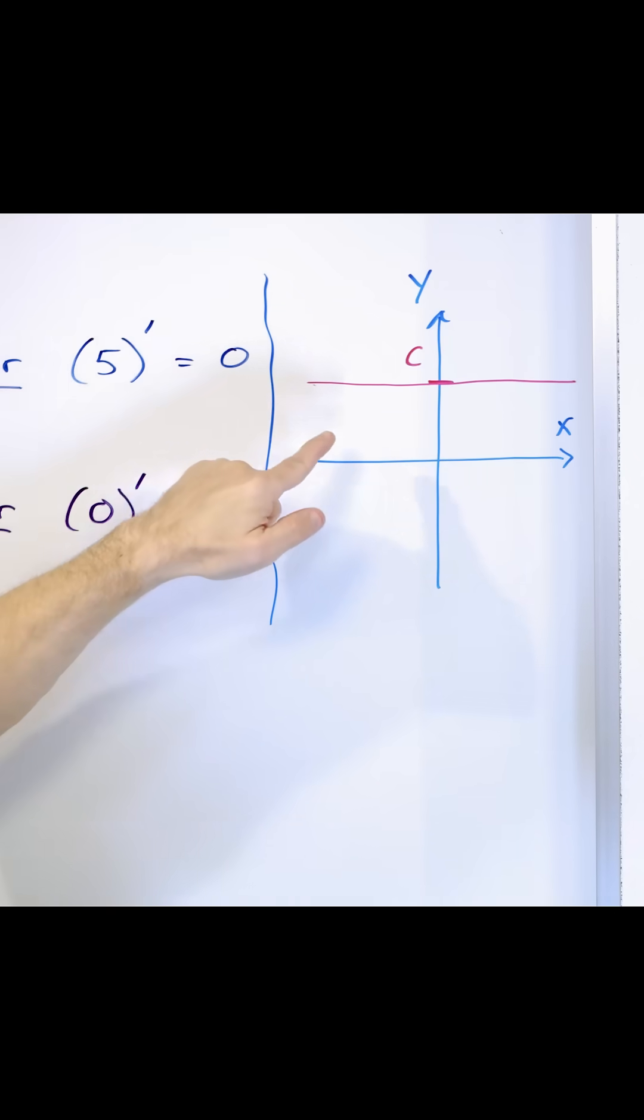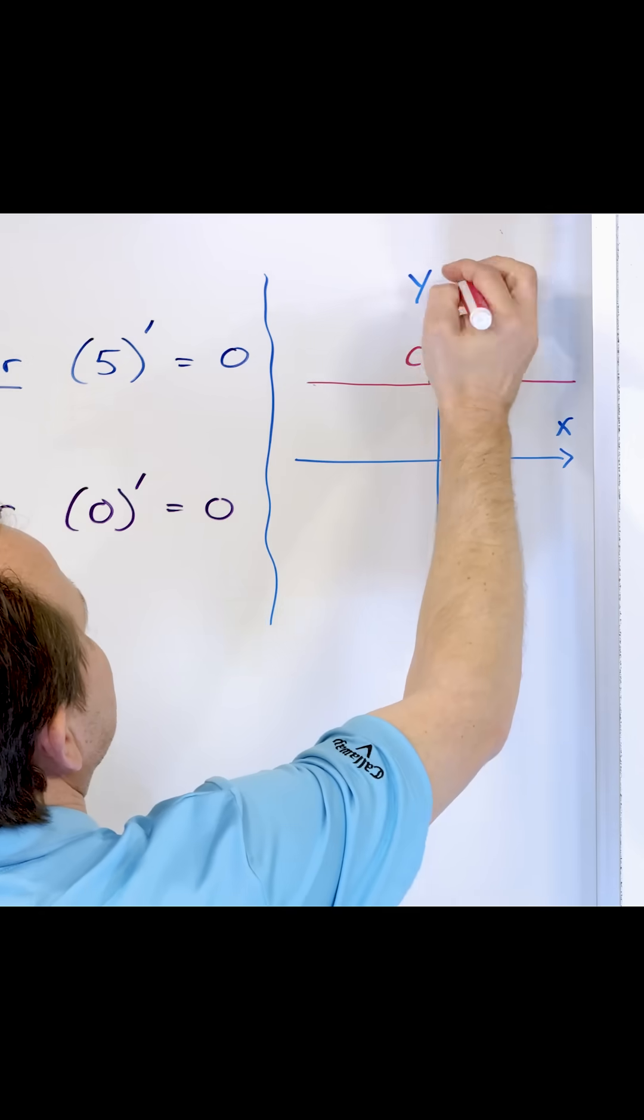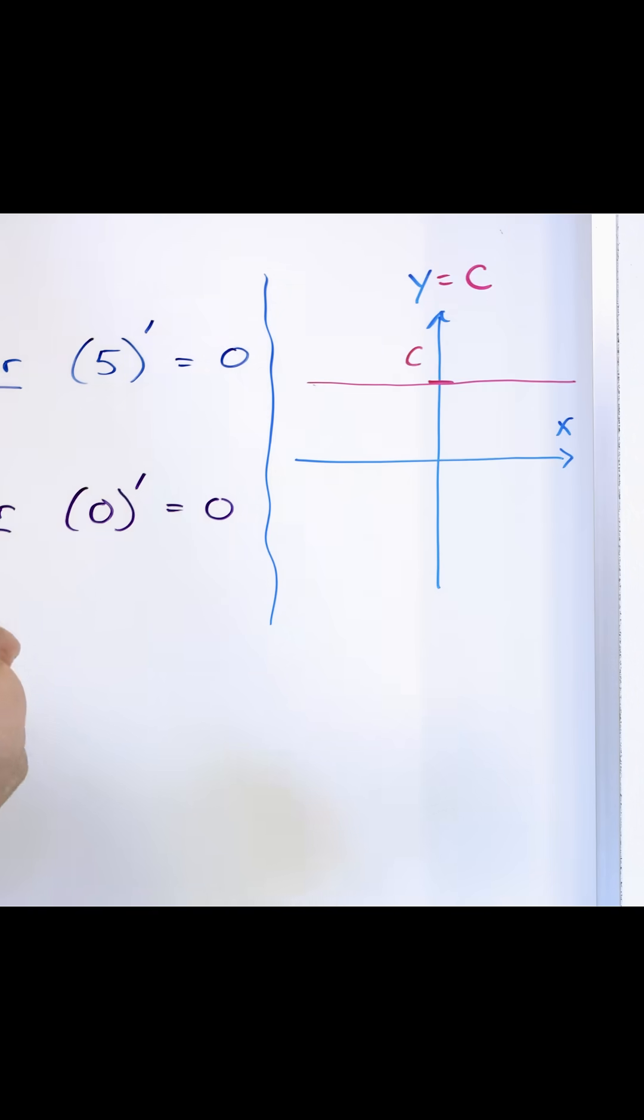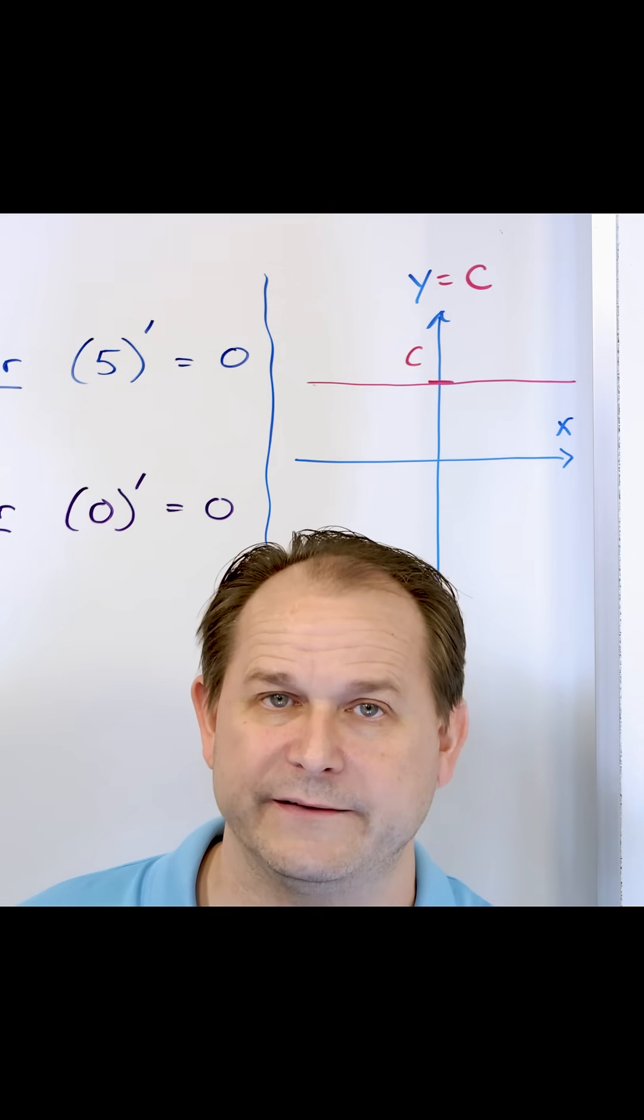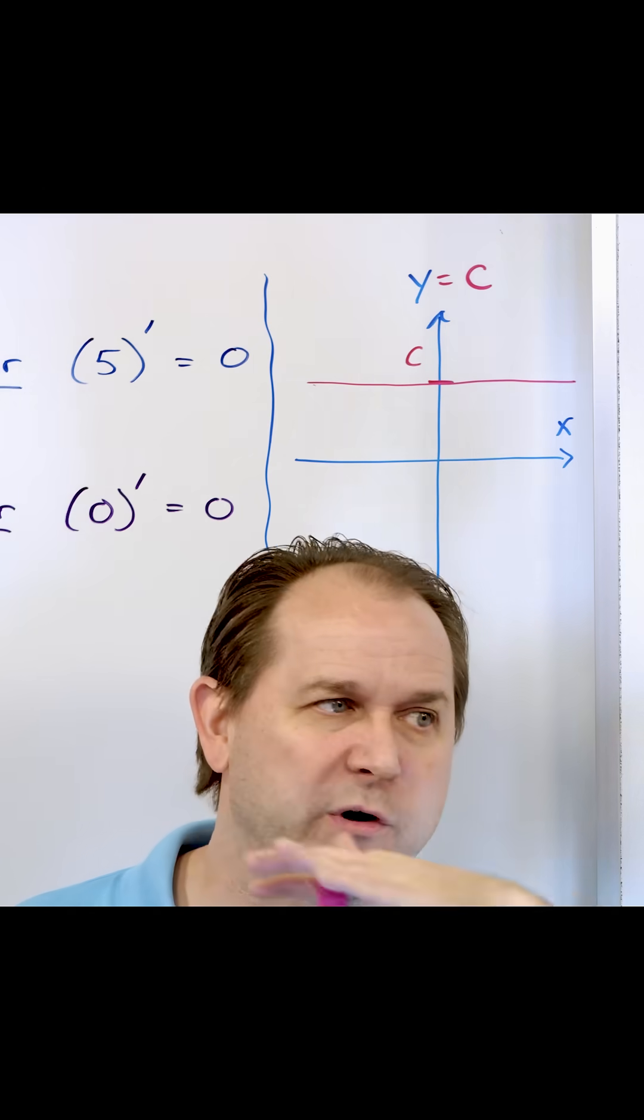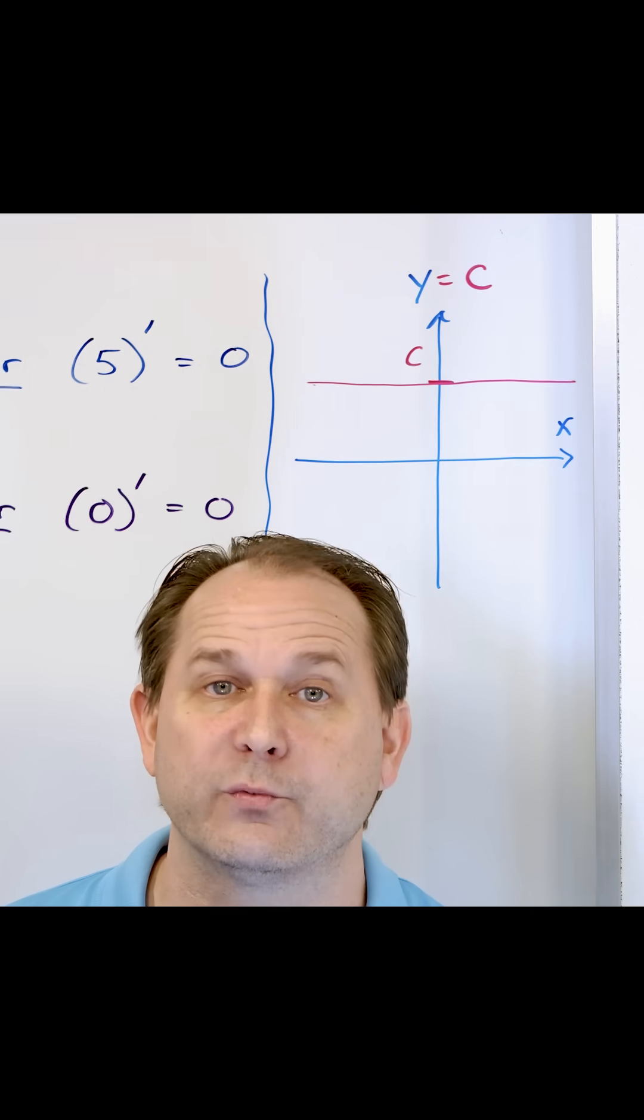But for any function where it's just f of x is equal to a constant, so you could say y is equal to c, that's the graph of this function right here, then the slope of this line is zero. So since the derivative is what the slope is, then any constant function where it's just a flat line is always going to have a derivative equal to zero.